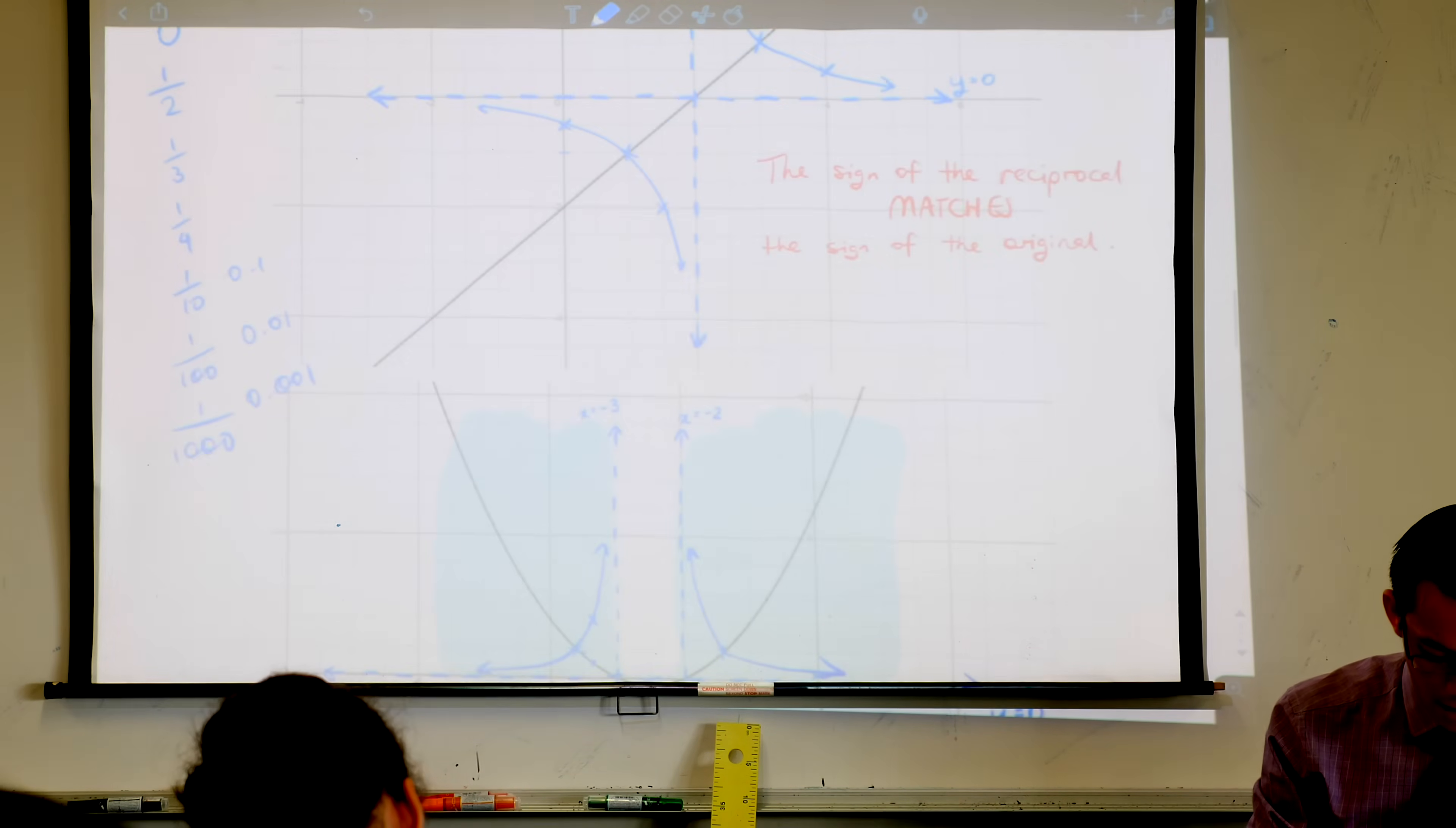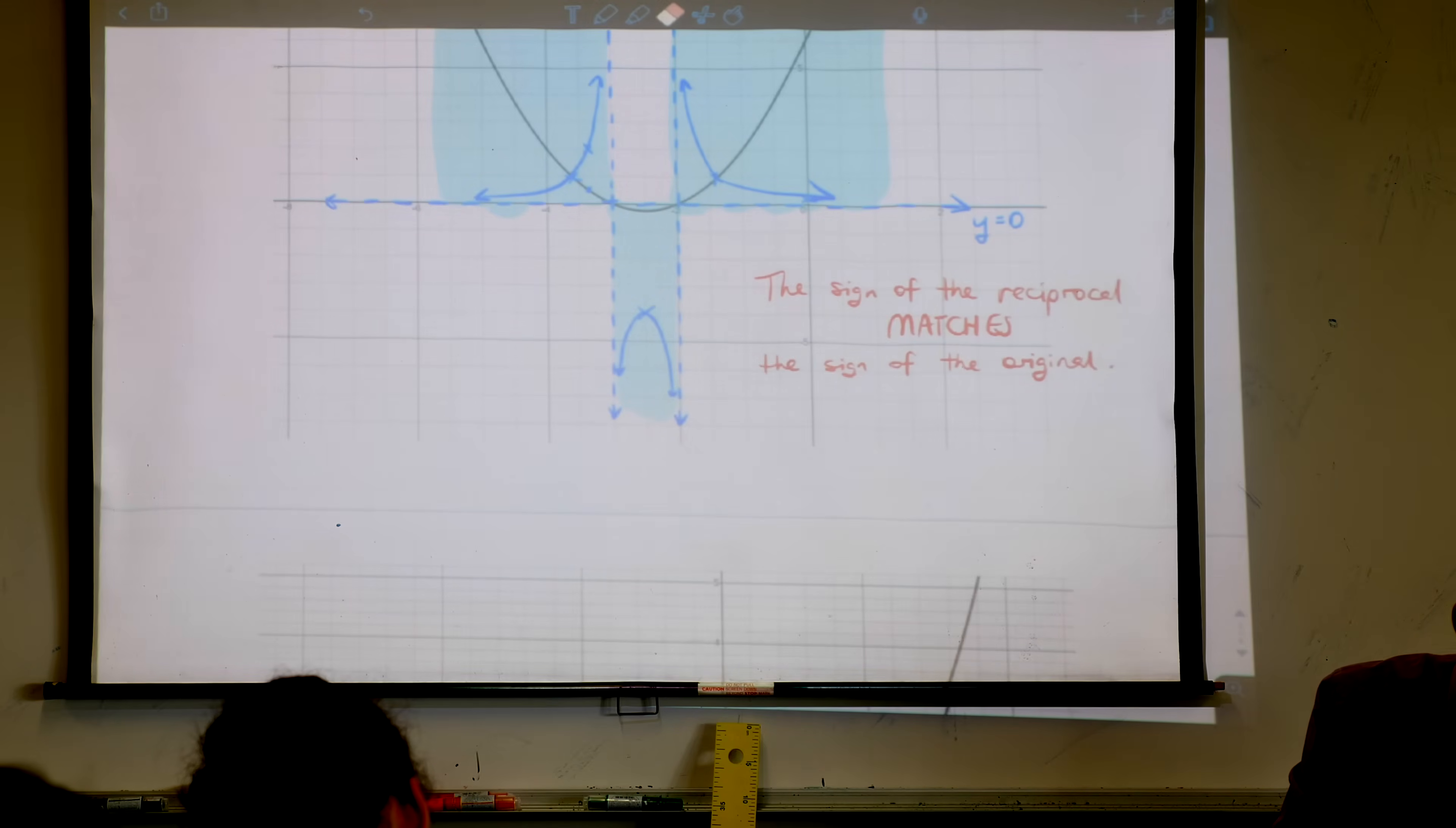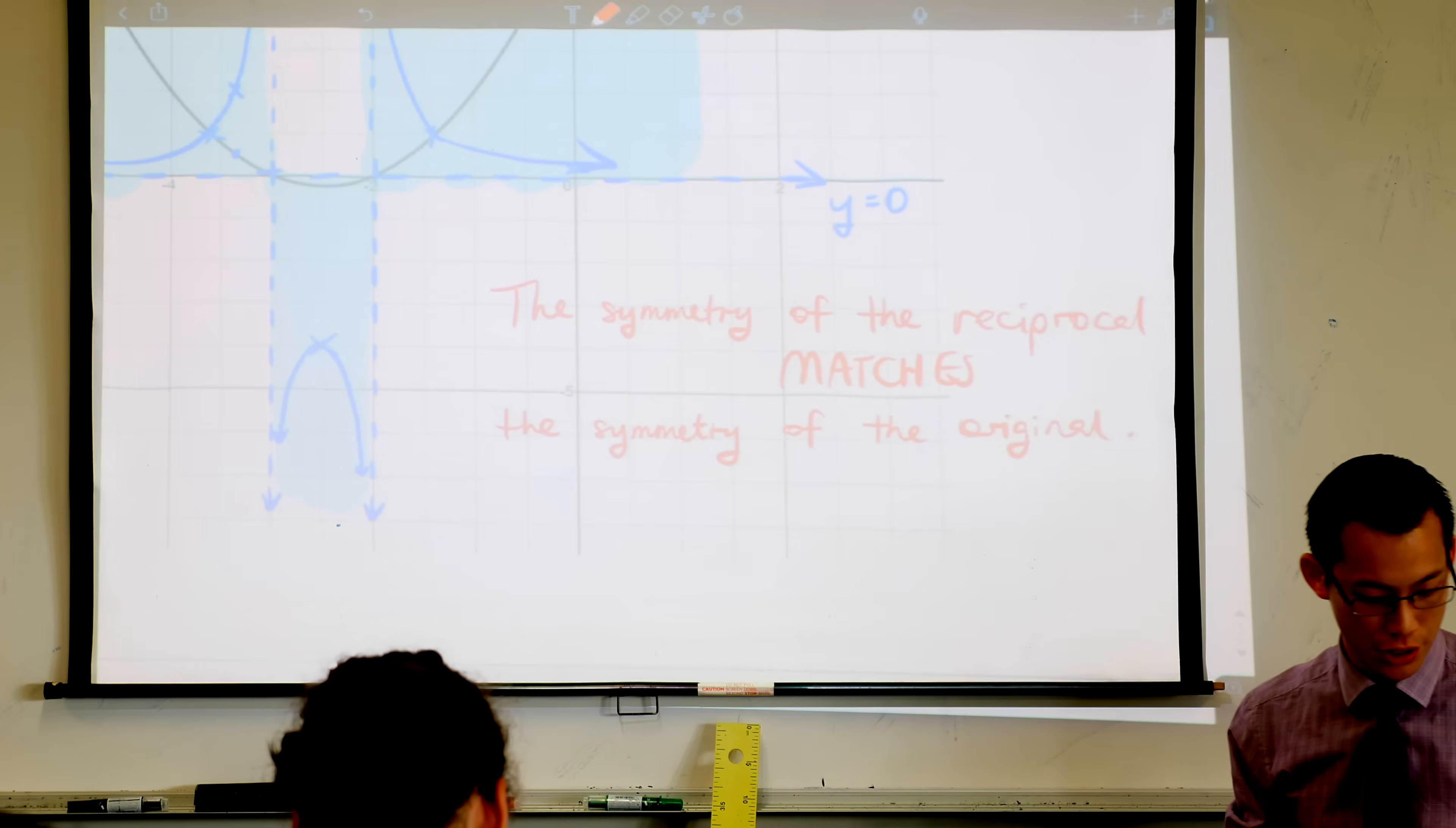So you know how we wrote this: the sign of the reciprocal matches the sign of the original. We can say this again. Sorry, I'm gonna be really cheap, you can't do this but I'm gonna do it anyway. It's not just the sign of the original that matches the reciprocal, it is the symmetry. So if you have a line of symmetry in your original function, then you will have a line of symmetry in your reciprocal function.